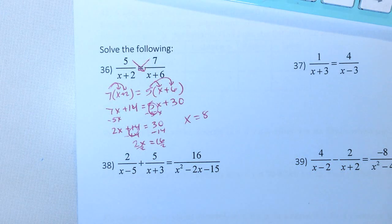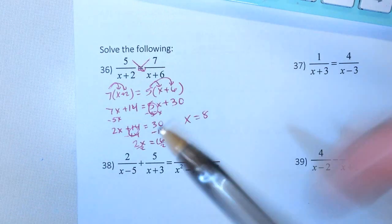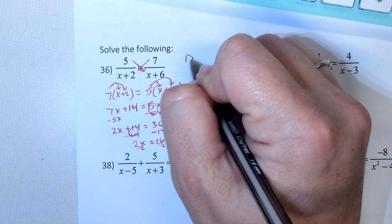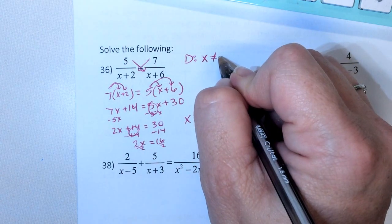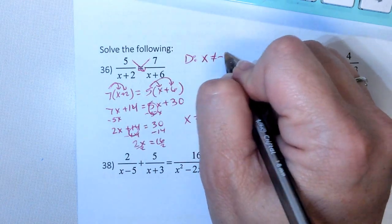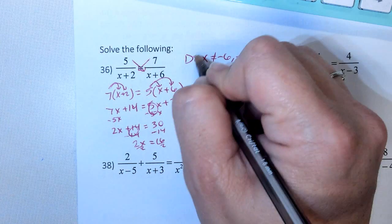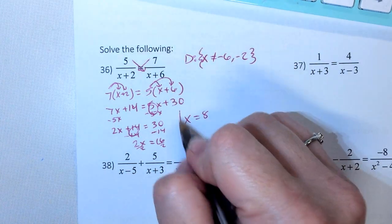Now, you do have to pay attention on these to what your denominator cannot be. So domain x cannot equal, well this would be negative 2 because that's what would cancel that, and this would be negative 6 because that's what would cancel that. Which is not those, so this can be your answer.